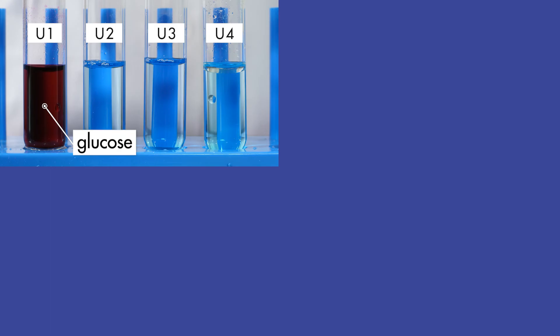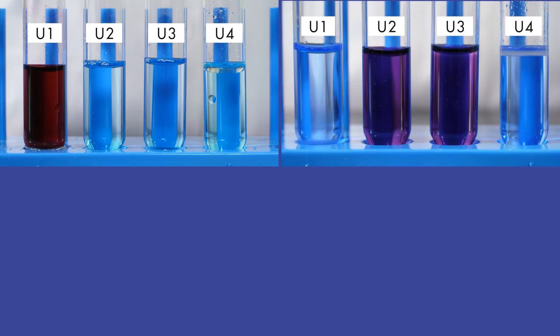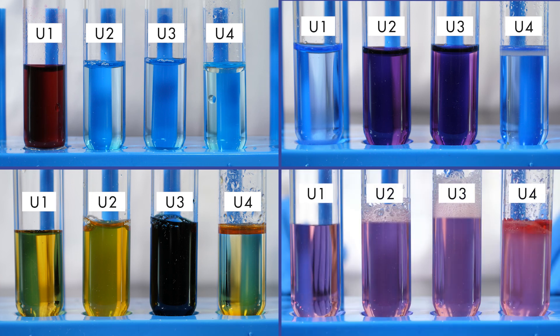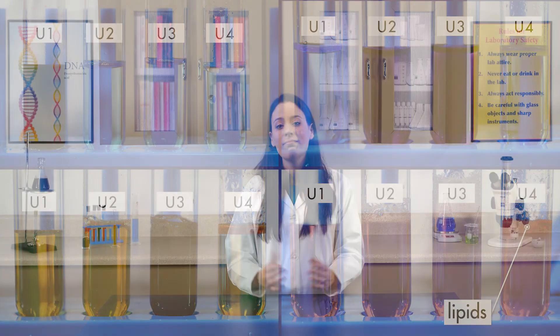From these tests, we now know that unknown solution 1 contains glucose, unknown solution 2 contains protein, unknown solution 3 contains starch and protein, and unknown solution 4 contains lipids. Now that we know how chemical indicators work to identify nutrients, we can put our knowledge to use in the next lab, where we will demonstrate digestion and absorption of nutrients.